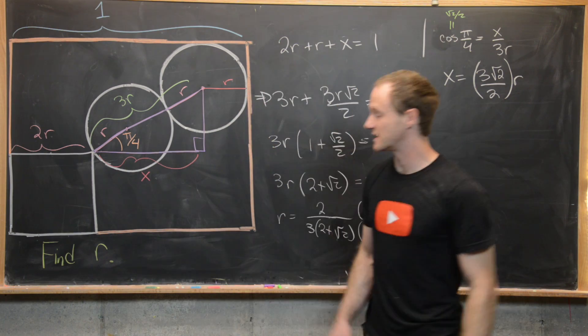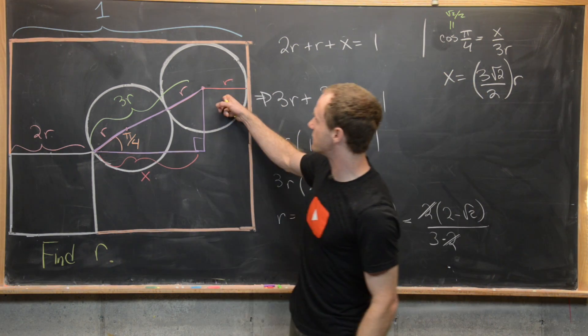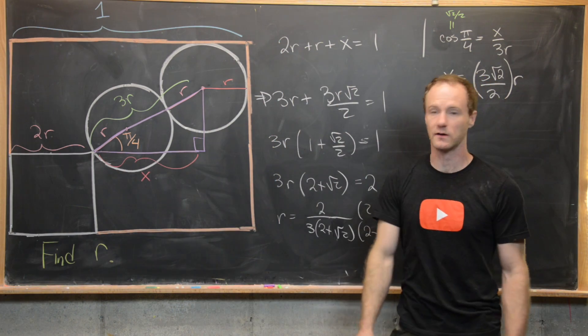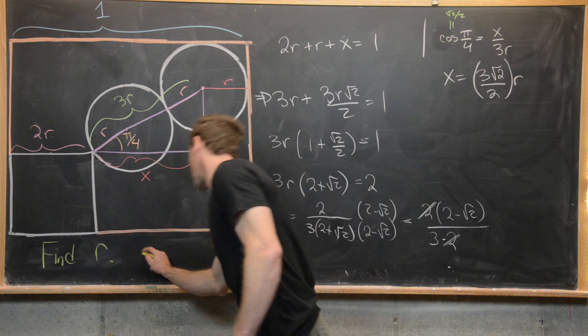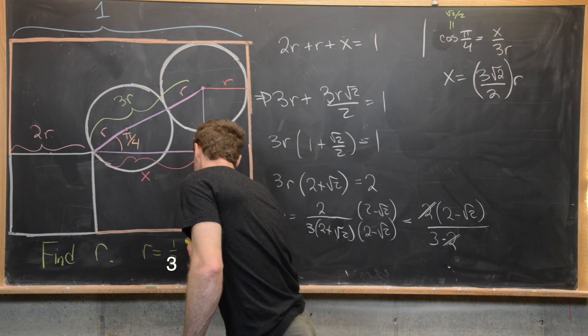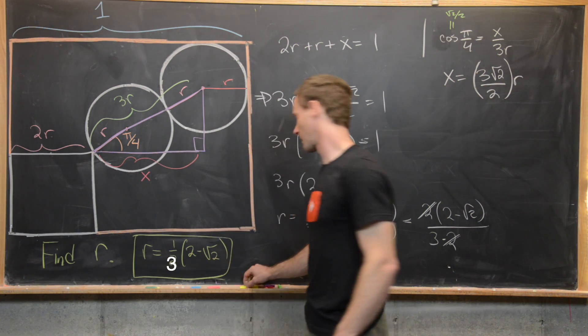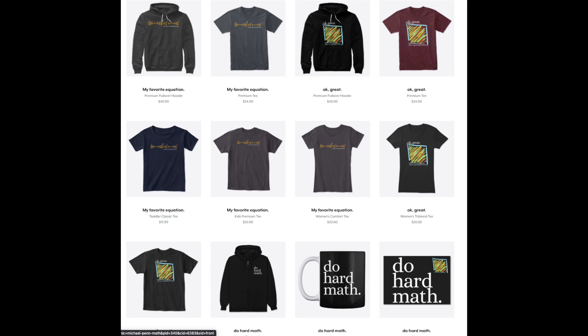So in other words, the value of r which will make this inscription of 2 circles and 1 square along the diagonal will be (2 minus √2) over 3. So we have our final answer is 1 third times (2 minus √2). And that's a good place to stop.